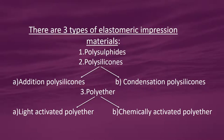There are three types of elastomeric impression materials: polysulphides, polysilicones, and polyether. Polysilicones are further divided as addition polysilicones and condensation polysilicones. Polyether is further classified as light-activated polyether and chemically-activated polyether.